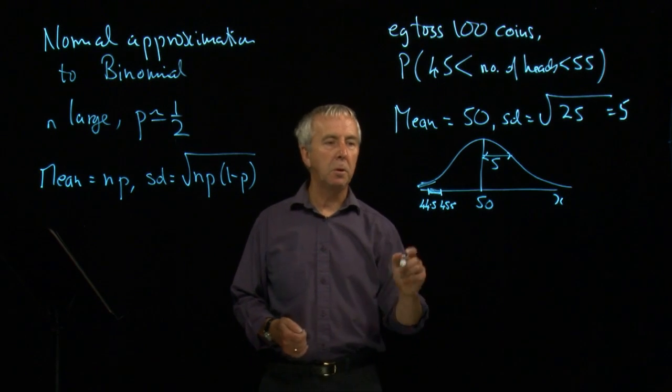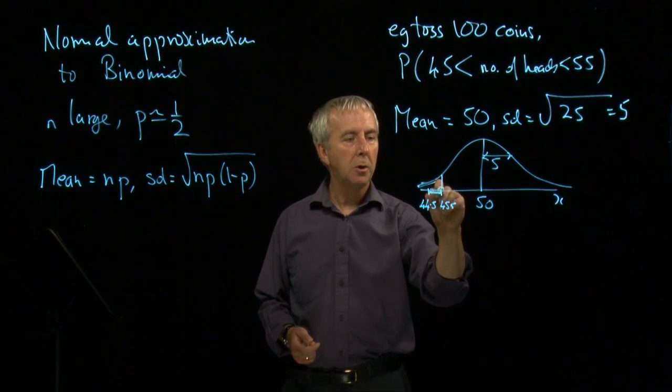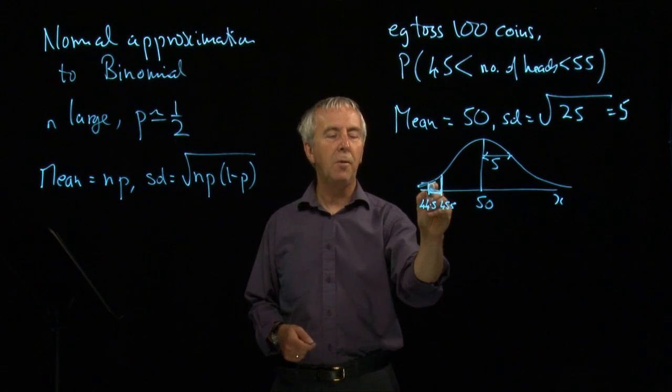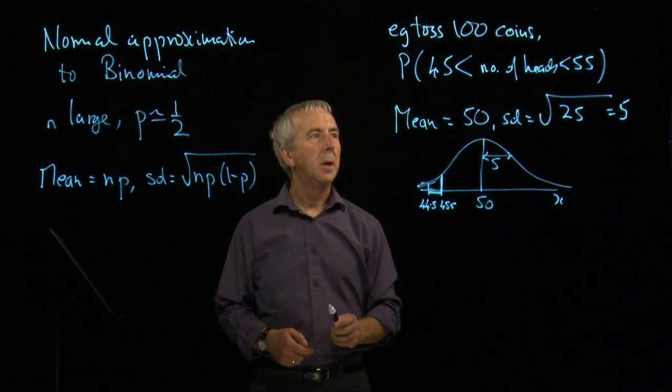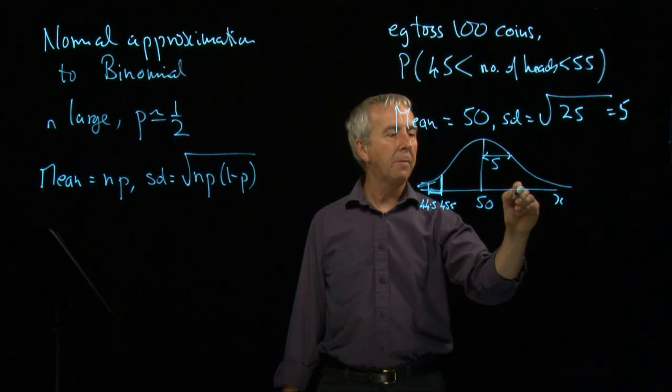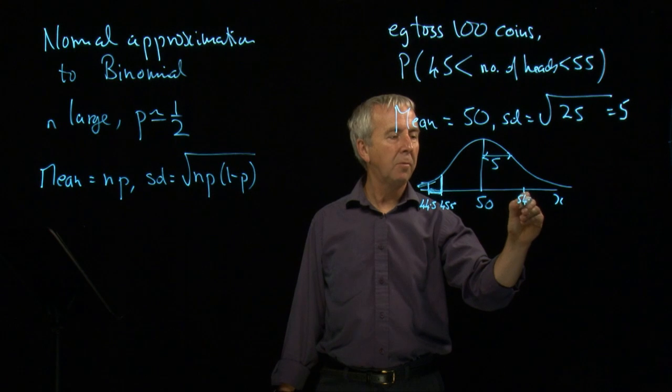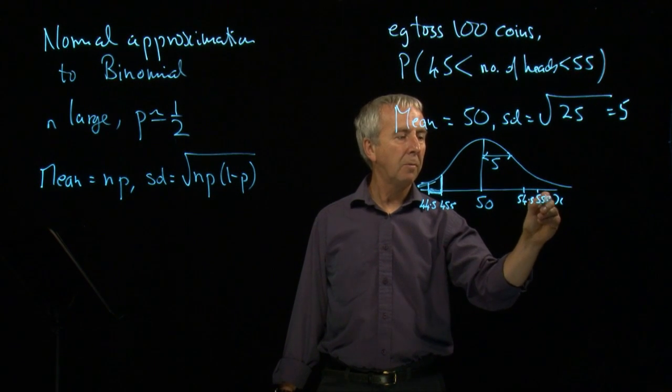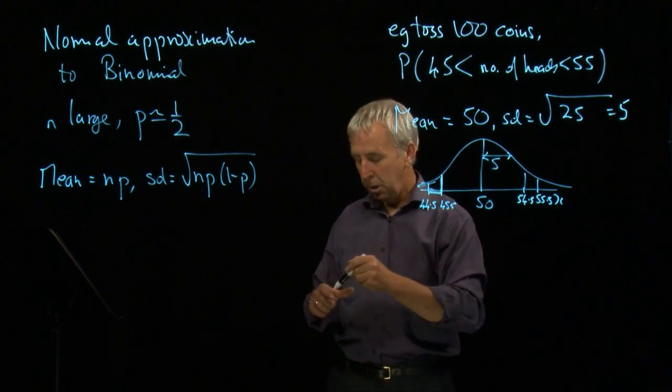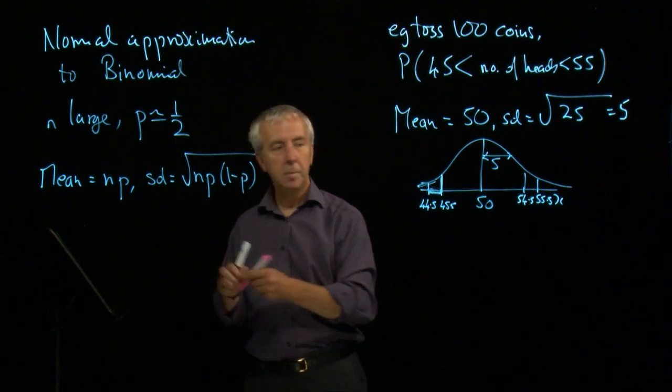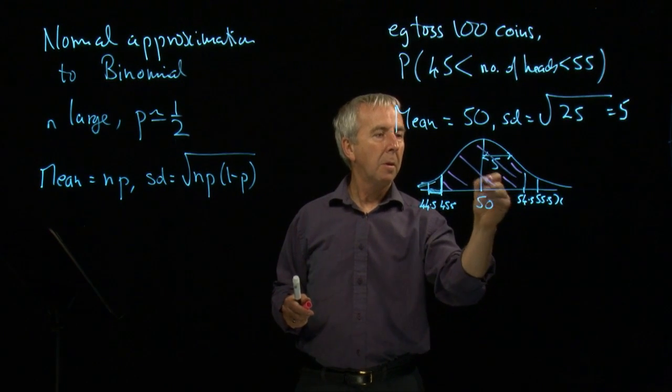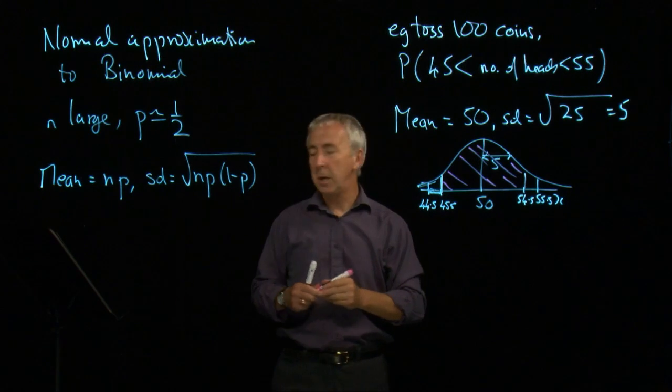So if we want to be bigger than 45, we must start at the top end of that particular block. That's the 45s, we need to start at the top. And similarly, if we want to be less than 55, 55 spans anything from 54.5 to 55.5. And we want to be less than that. So we need to be this area here.